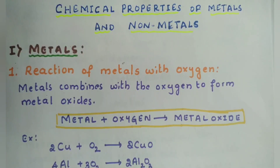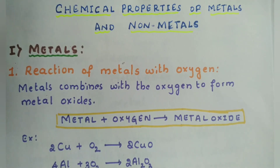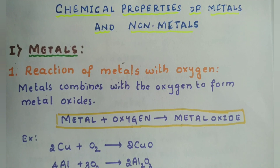Hello students, welcome to Study Hive. In this video we are going to discuss the chemical properties of metals. This is the second part of your third chapter, that is metals and non-metals. We are going to discuss how metals react with oxygen, how they react with water, how they react with acids and solutions of other metal salts, and also how they react with non-metals. These five things we are going to discuss.